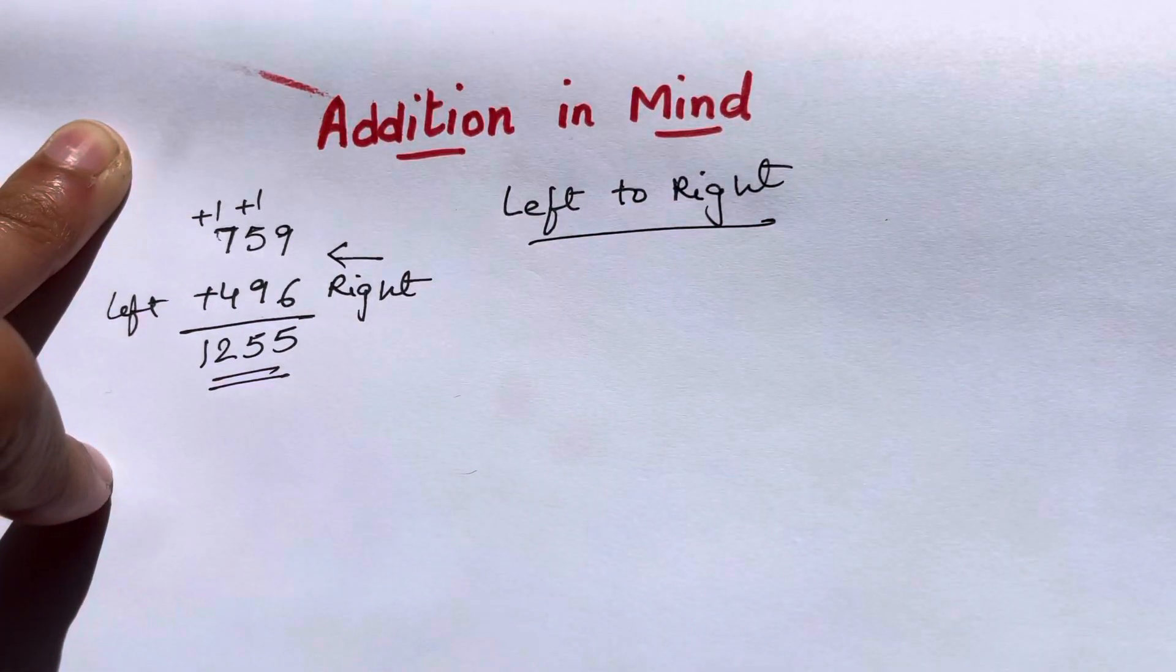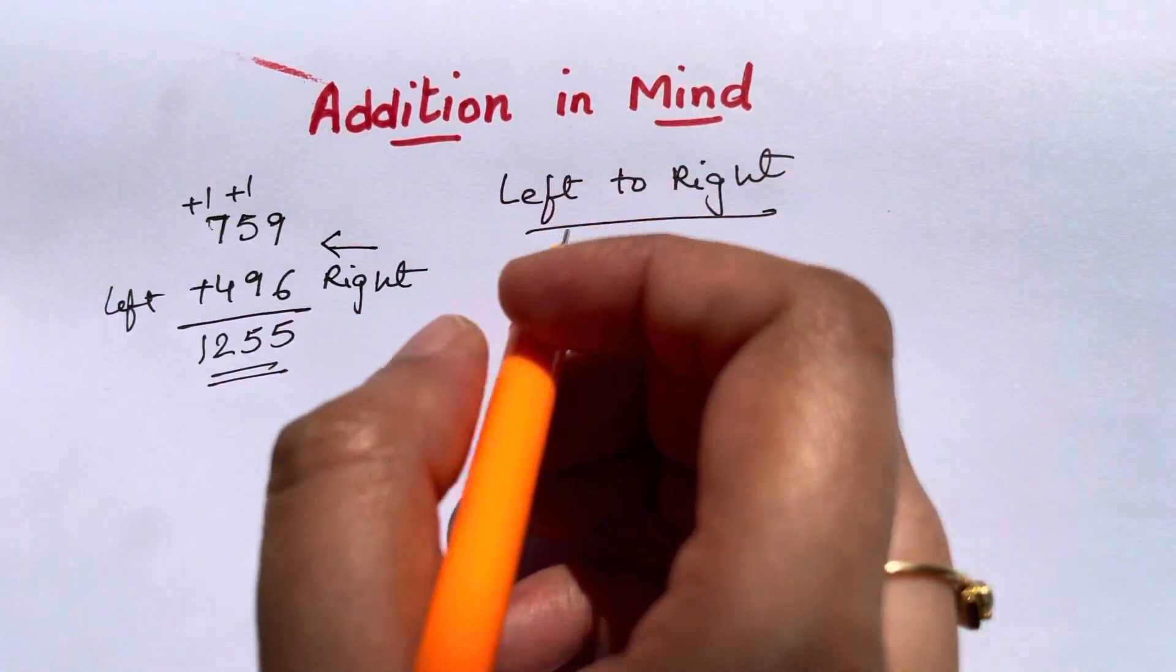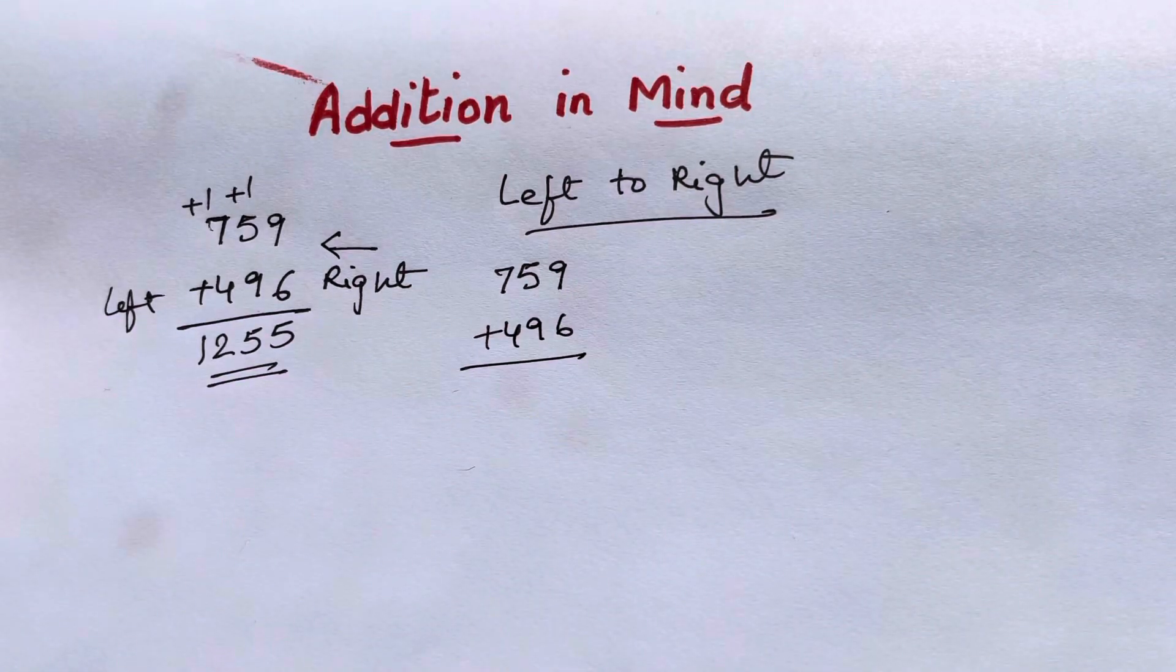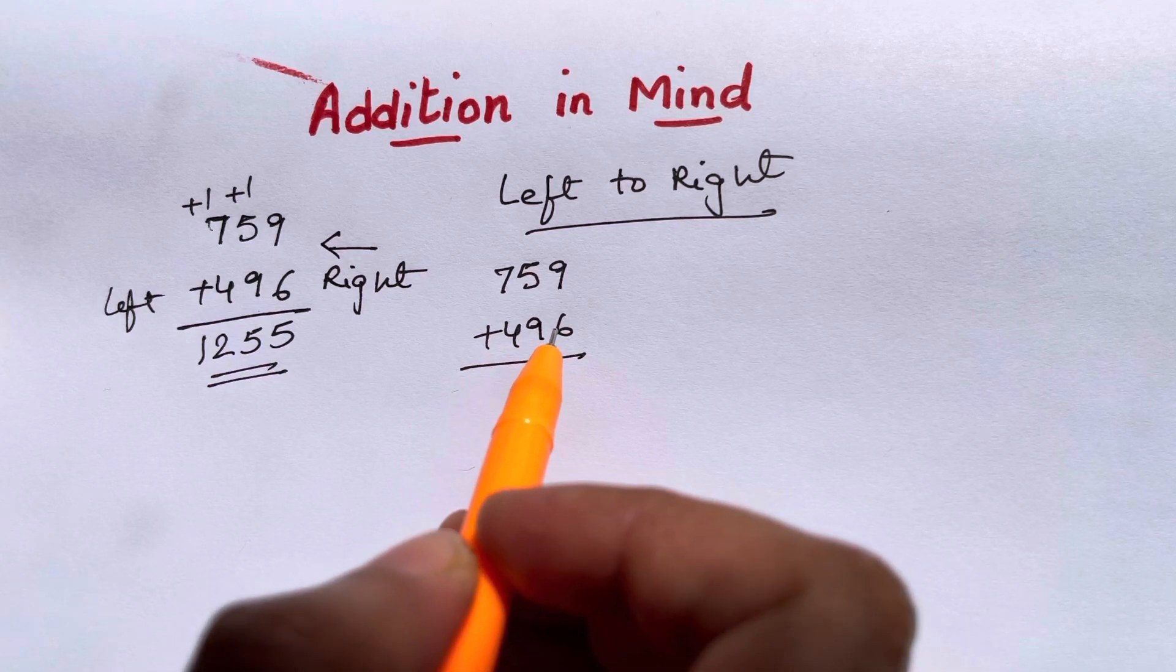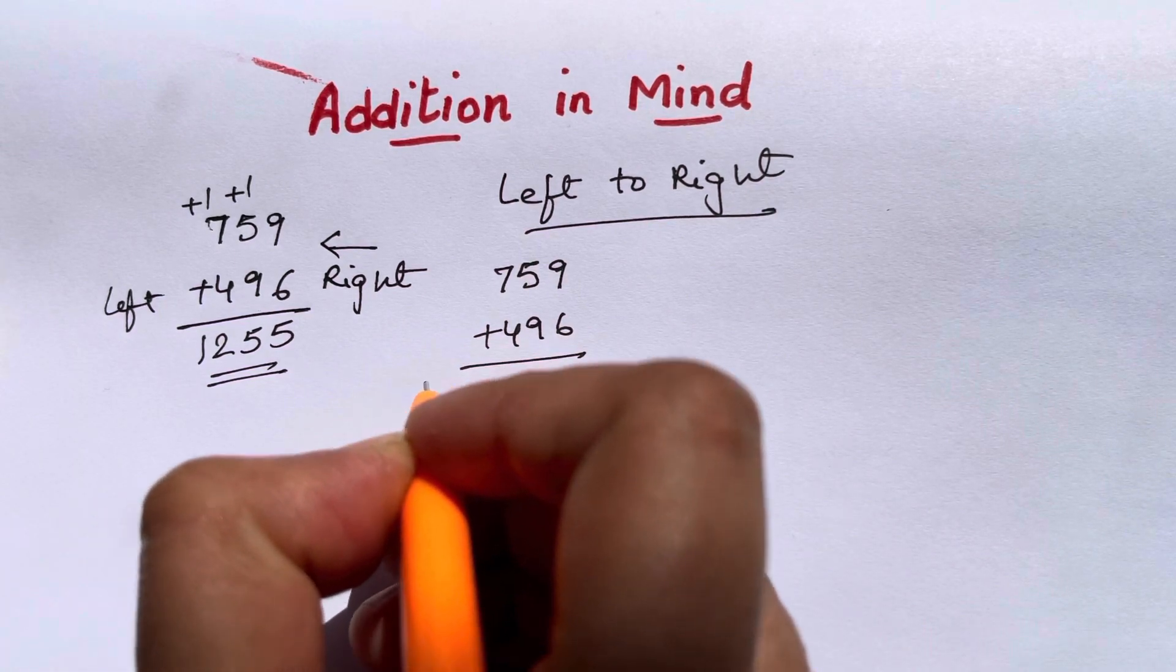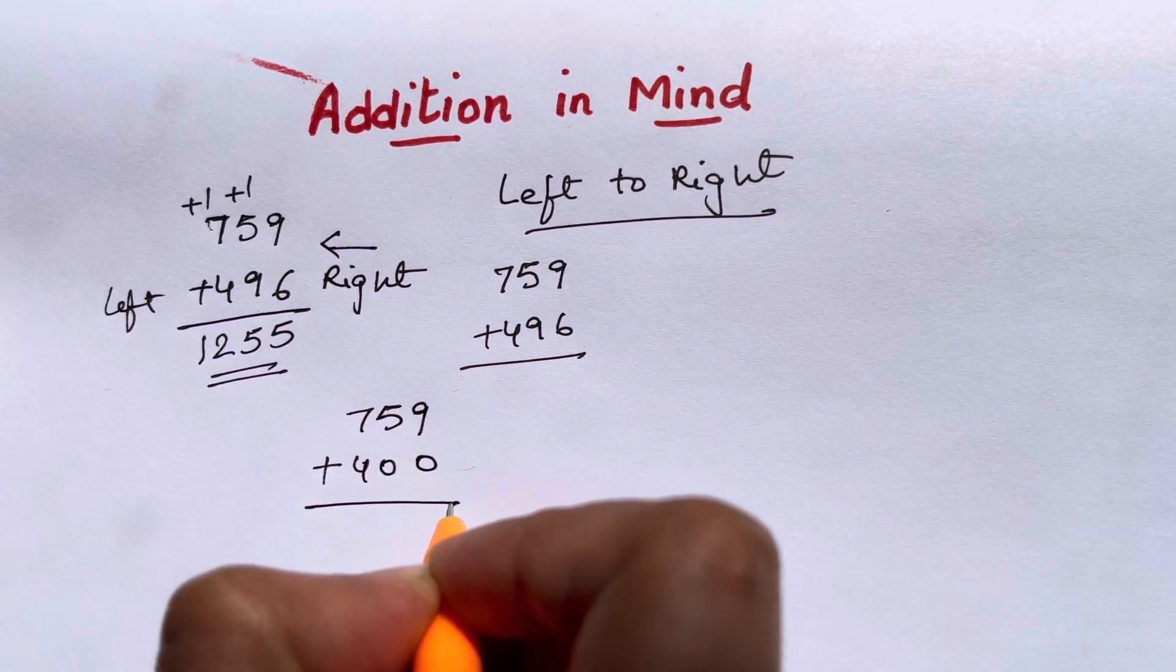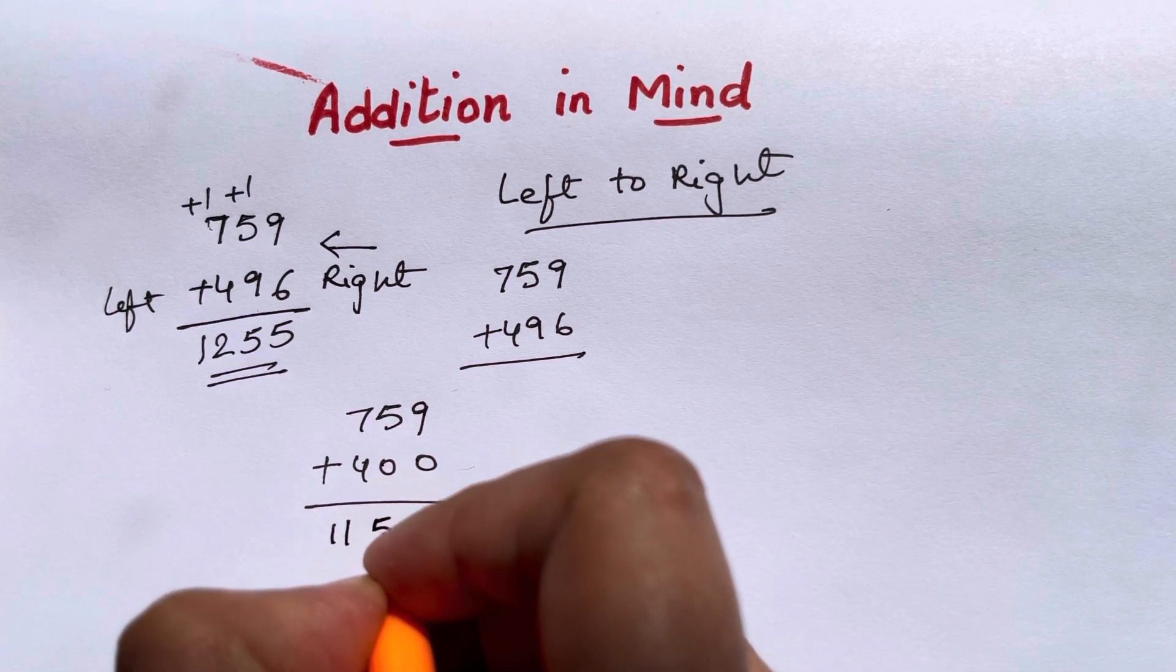Now I'm going to show you how to do this from left to right. If you have 759 plus 496, all you're going to do is 759 plus 400. You're just going to round off and add one by one. 759 plus 400, and 7 plus 4 is 11, so you'll have 1159.